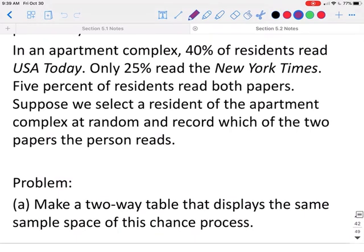In an apartment complex, 40% of the residents read USA Today. Only 25% read the New York Times. 5% of the residents read both papers. Suppose we select a resident of the apartment complex at random and record which of the two papers the person reads.